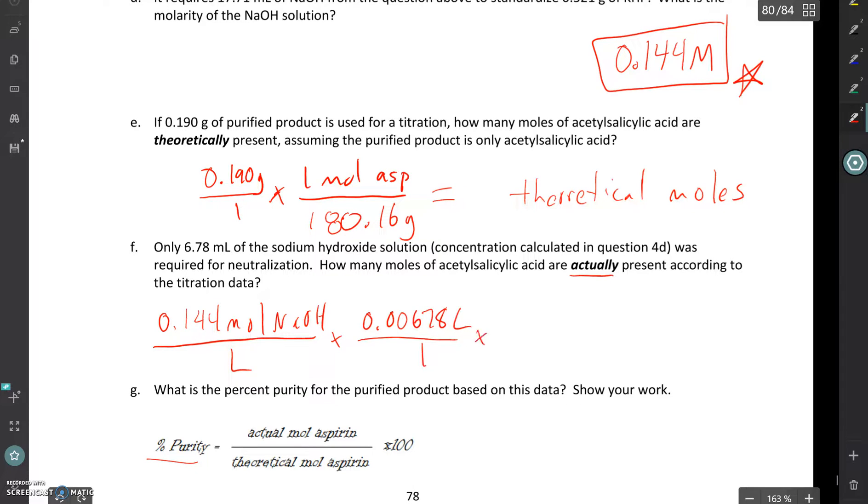All right so we know we've got a 0.144 molar solution of sodium hydroxide. We can calculate how many liters are there by dividing by a thousand. If you want to show it in multiple steps you're more than welcome to. I'm going to condense and I know that for every one mole of aspirin it requires one mole of sodium hydroxide to neutralize it. Again I can go through and do the calculation careful again with sig figs and come up with my actual moles.